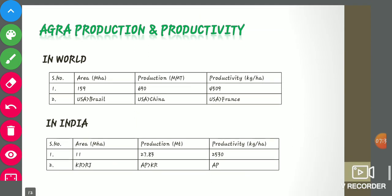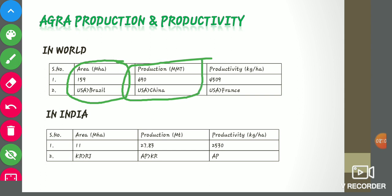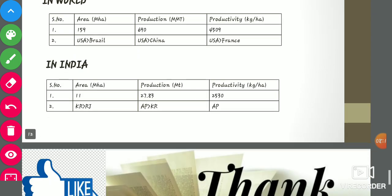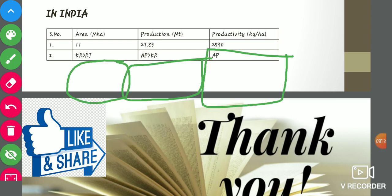In world context, the area under maize is 159 million hectares, production is 690 million metric tons, and productivity is 4509 kg per hectare. In terms of area, the USA is the leading country followed by Brazil. In terms of production, the USA leads followed by China, and for productivity the USA leads followed by France.